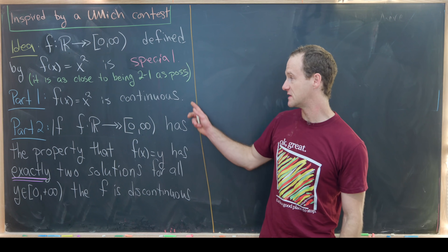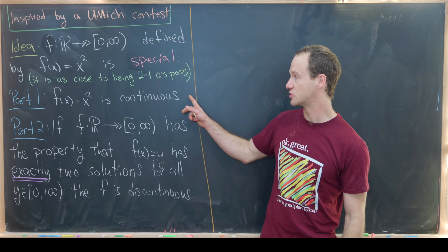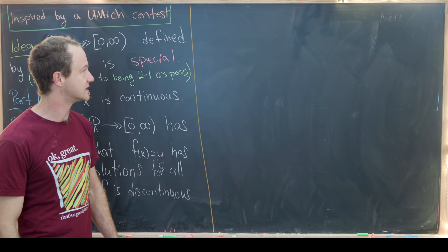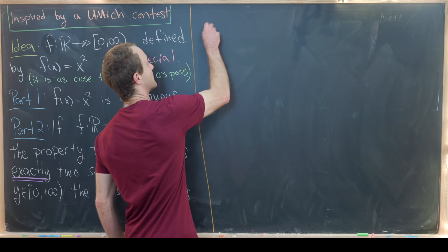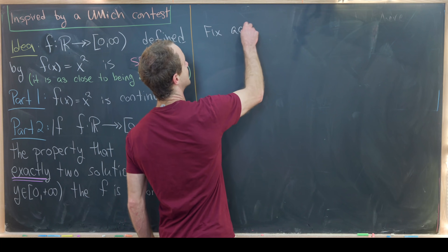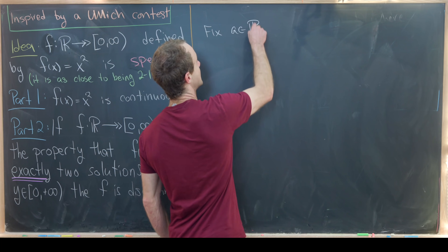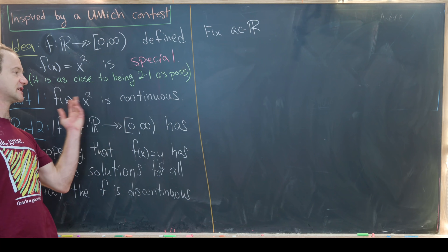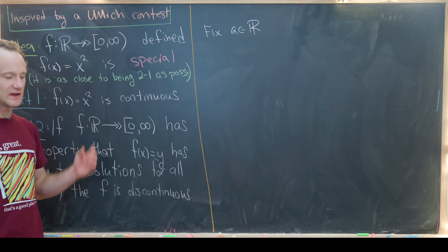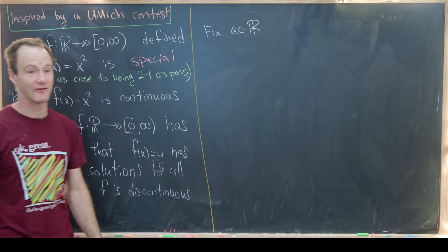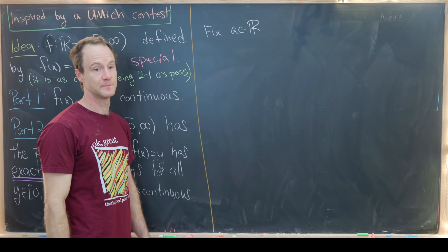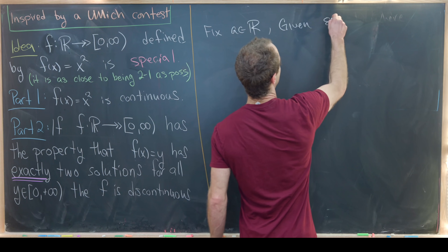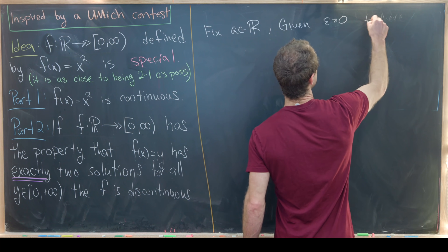Let's jump into the solution and do part one first — showing that f(x) = x² is continuous. We start by fixing a real number a, since we want to show continuity everywhere. Then let's say we are given some arbitrary epsilon greater than zero.